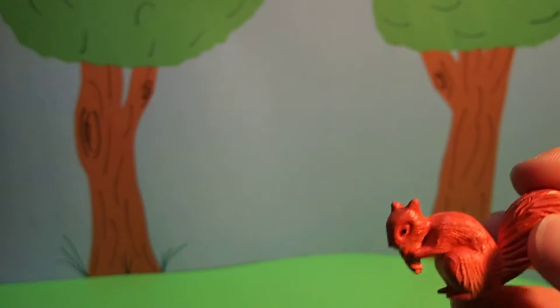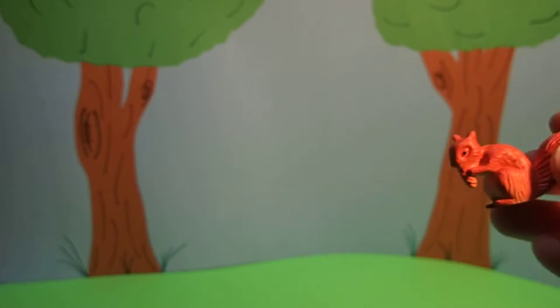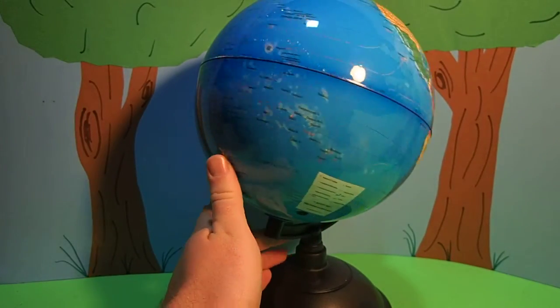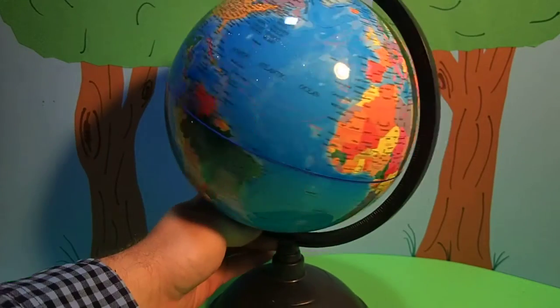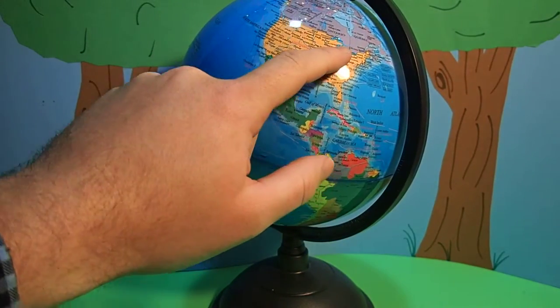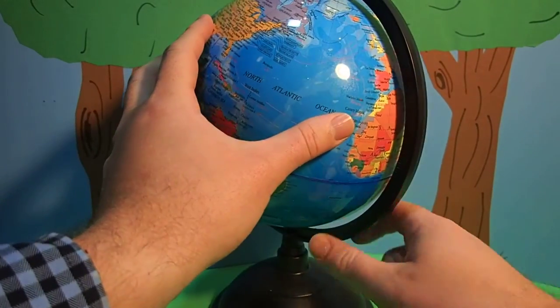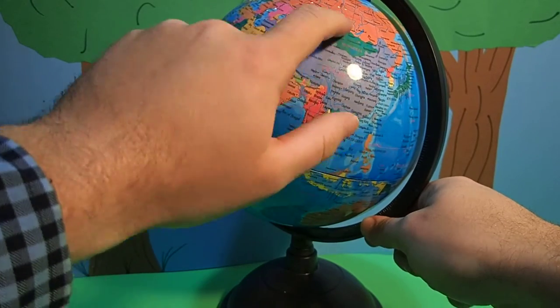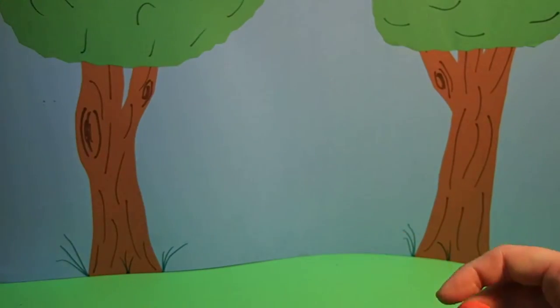Red squirrels live all over North America, Europe, and Asia. Let's see where that is on the map. They live here in North America, and they also live in Europe and parts of Asia. Pretty cool.